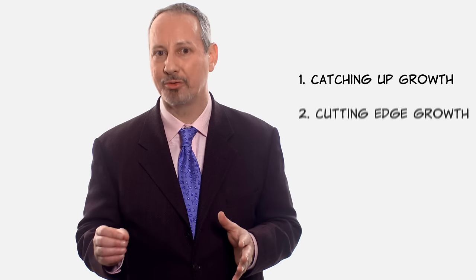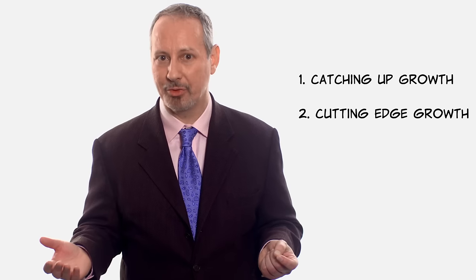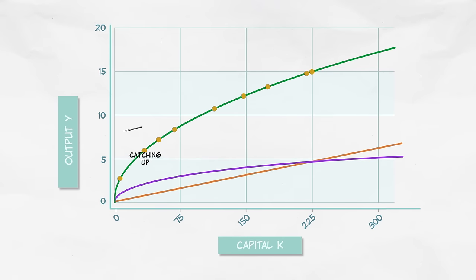It's useful, however, to bring back the two types of growth that we discussed earlier. Catching up and cutting edge growth. When you're catching up, when you're poor relative to your steady state, that's when the Solow model predicts that you grow quickly as capital accumulates. But then you slow down as you approach the steady state.